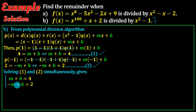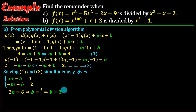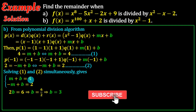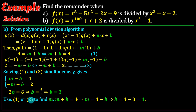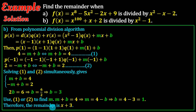m plus b equals 4, and minus m plus b equals 2, or similar values. So m equals 1 and b equals 3. Therefore the remainder when x to the power of 100 plus x plus 2 is divided by x squared minus 1 is x plus 3.